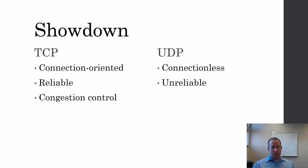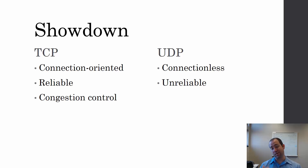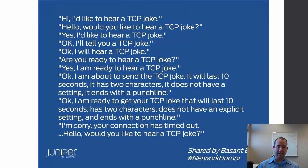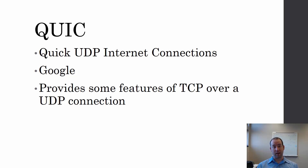Just a little reminder: TCP is a connection-oriented protocol — it's the reliable protocol and it has congestion control. UDP is unreliable, meaning it doesn't guarantee that every message is going to be there. It's connectionless and doesn't have any form of congestion control. And here's a little TCP joke — go ahead and pause the slide and read through that. It's pretty funny. I also have a UDP joke, but I'm not sure you'd get it. And frankly, I don't really care.